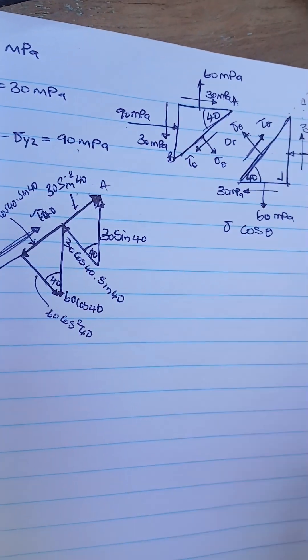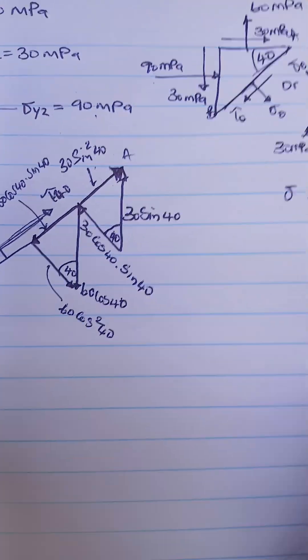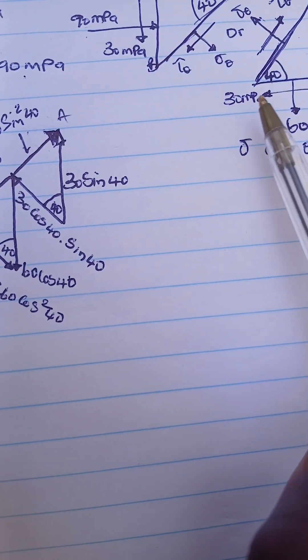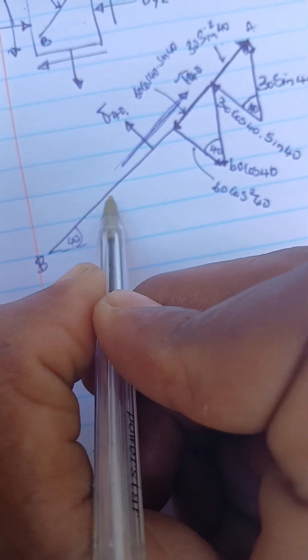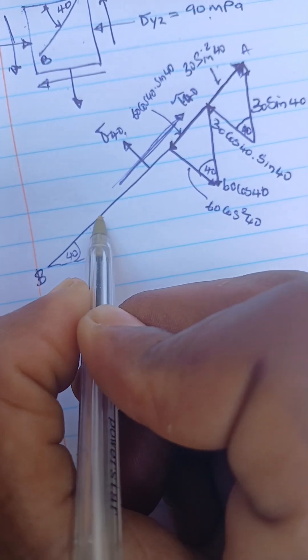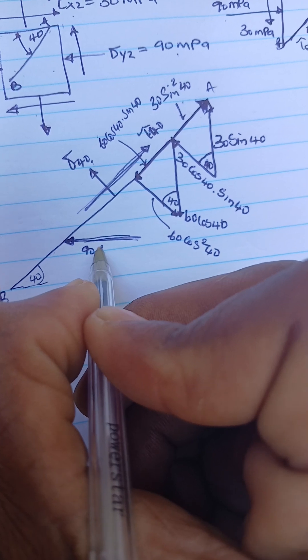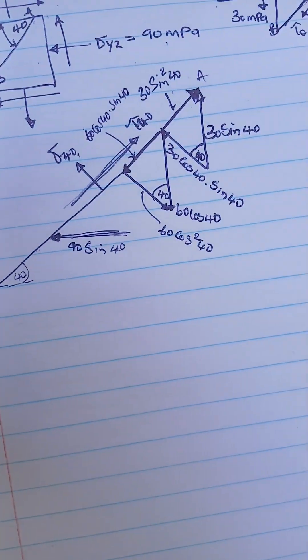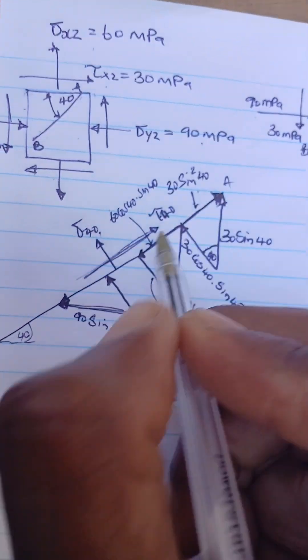The two shear components are pointing in different directions — one going down and one going up. Now we go to the direct stresses: 90 MPa and also another shear of 30 MPa. These ones are going in this direction, and if we extend them they hit this line. Drawing them in this plane, our 90 MPa becomes 90 sine of 40, and then completing it, whatever you draw must be parallel with this line.